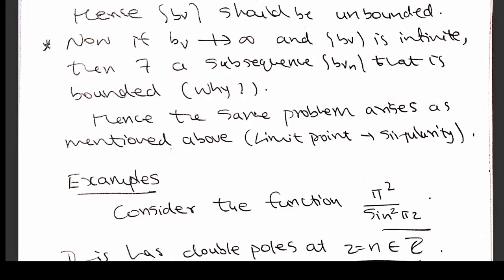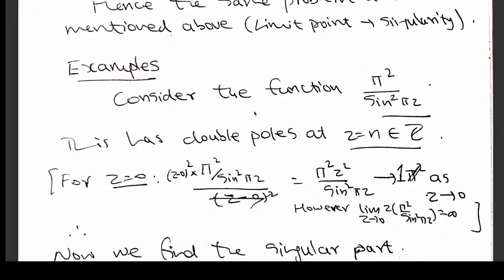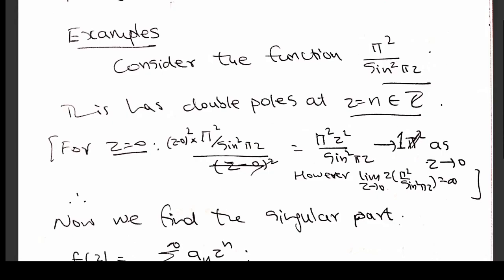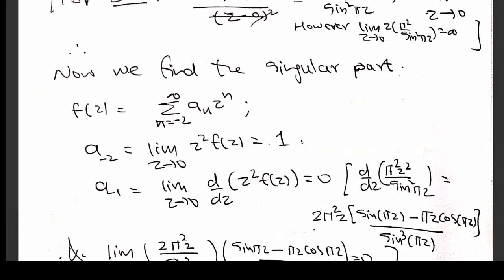Similarly, if you have a constant term for p_ν, that will also create some problem. That will not become the singular part, because the constant term will be part of the principal part. Now, we have described an example: consider the function π²/sin²(πz). This has a double pole at each integer, which you can easily verify. Since it is a double pole, the Laurent expansion will have two negative parts. The coefficient of 1/z can be found to be 0, and the coefficient of 1/z² is found to be 1.